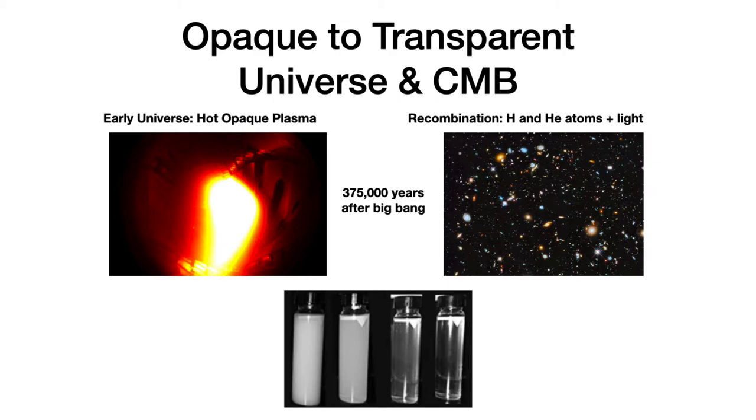Now this transition from opaque universe to transparent universe is very similar to the transition that happens in a glass of diluted milk. As we all know, milk is opaque, as it appears in the vial on the bottom left. As we add more and more water, diluting the milk, the milk suddenly has a transition where it goes from opaque to transparent. And that is exactly the same thing that happened to the universe in the age of recombination.